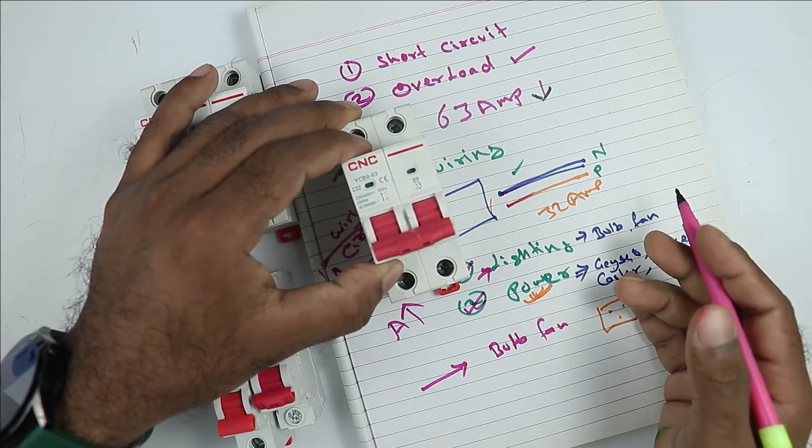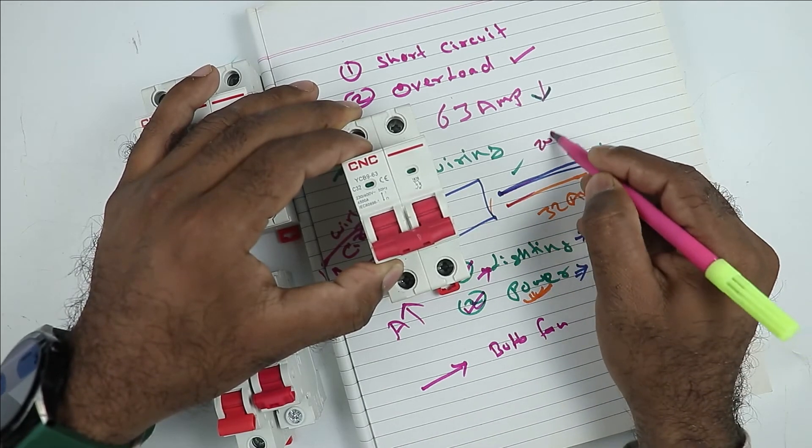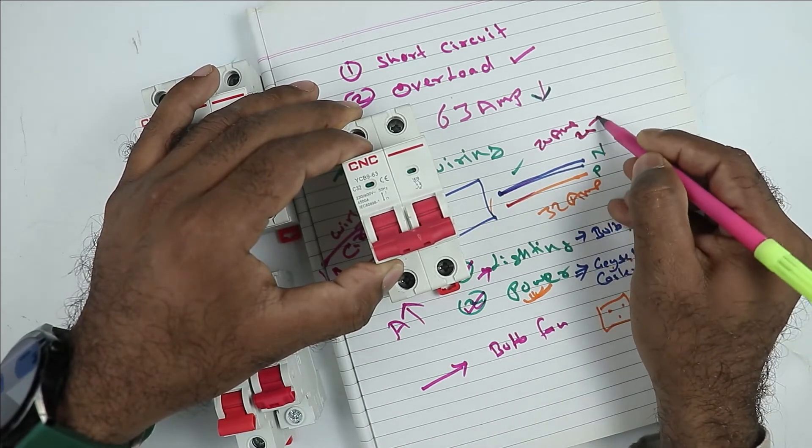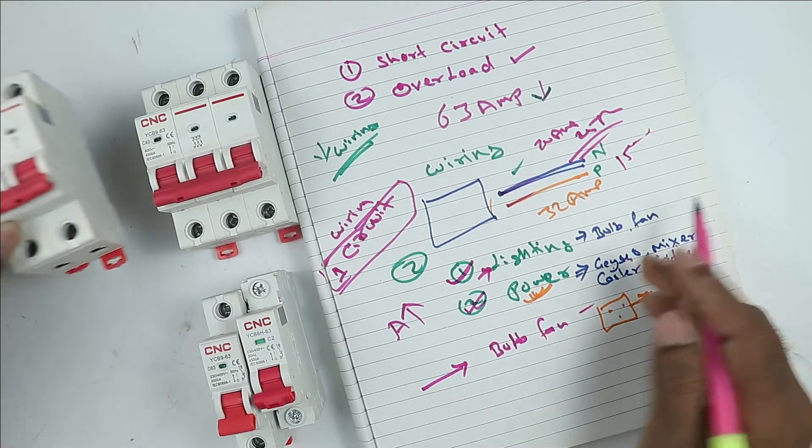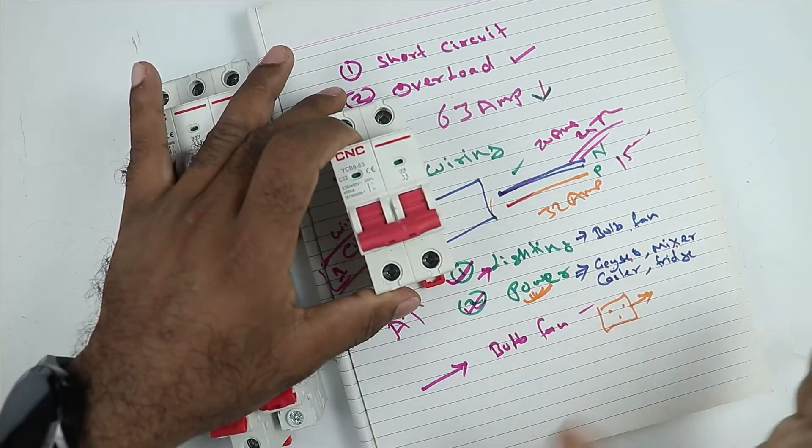I mean when this much load is running, the current will be around 20 ampere or it can be 25 ampere. This will be the highest. So if the whole load is running, then this MCB will provide the protection.